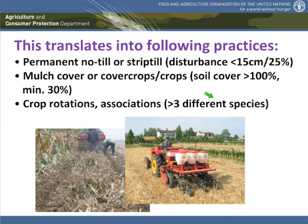Regarding mulch cover, we want to achieve a cover as complete as possible — ideally more than 100% — but in no case less than 30% of the soil should be covered with residue at the lowest point of the year, because 30% is the minimum threshold to get some erosion control effect. And for rotations, we want to see at least three different species grown in sequence or in association. Less than three species is not really a diversified rotation.